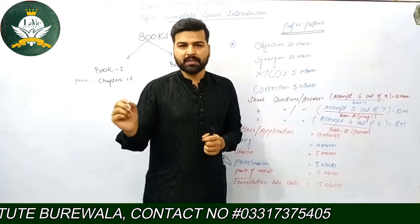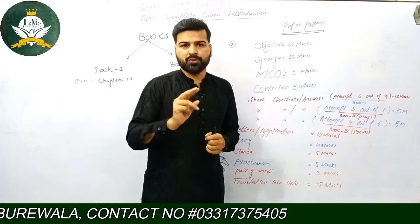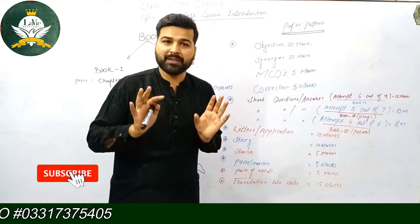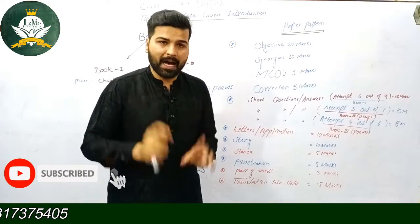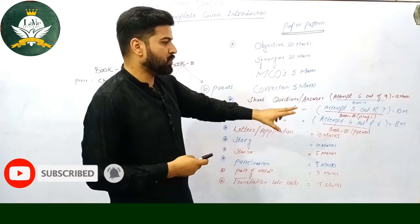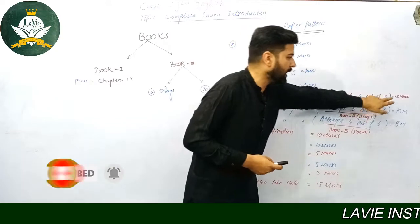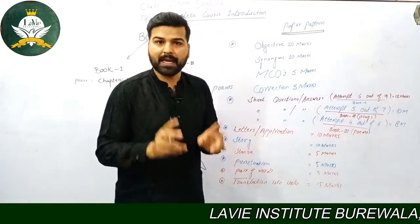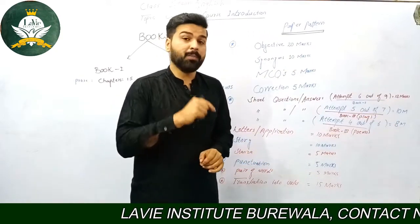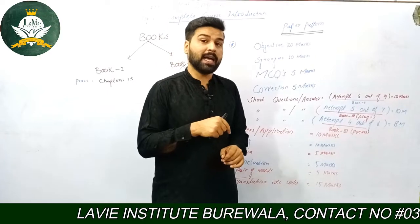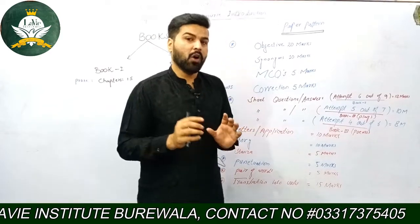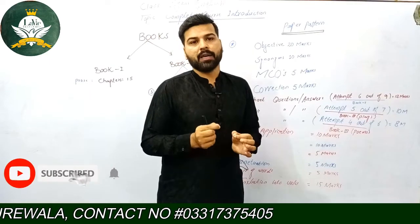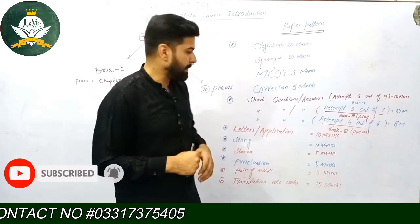تو اس طرح آپ کے book کے جو تین portions ہیں — book one کا prose اور book three کے plays and poems — ان تینوں سے آپ کو question answers آنے ہیں، جن کے total marks 30 بن جائیں گے: 12, 10 اور 8۔ 30 marks آپ کے بنیں گے question answers کے۔ اس لیے یہ بہت important ہے کیونکہ یہ بہت زیادہ marks ہیں، اور ہم نے ہر ایک mark کو دیکھنا ہے کہ ہم وہ کس طرح حاصل کر سکتے ہیں۔